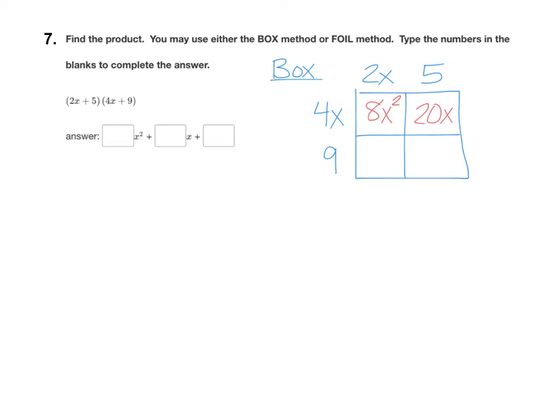Then the next box is a 9 times a 2x. Well, 9 times 2x is 18x. And then our final box, we take 9 times 5, which is 45. Now the answer is inside the box.